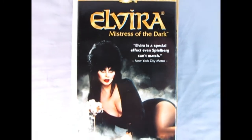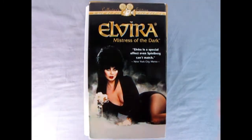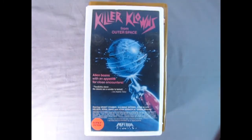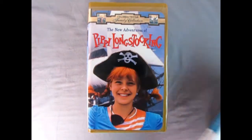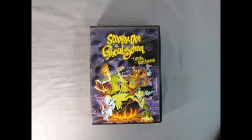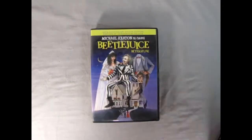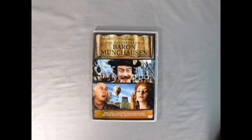1988 saw huge amounts of movies, music, and TV shows. Some of those were Elvira Mistress of the Dark, Killer Clowns from Outer Space, The New Adventures of Pippi Longstocking, Scooby-Doo and The Ghoul School, Beetlejuice, and who could forget The Adventures of Baron Munchausen.